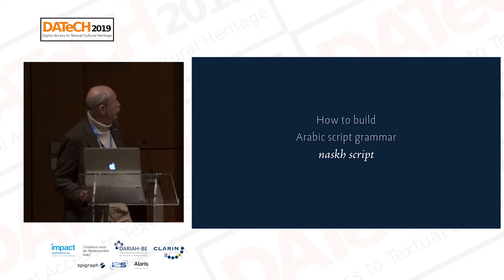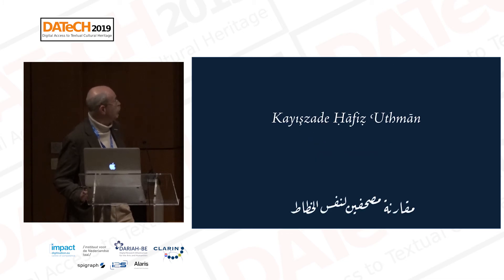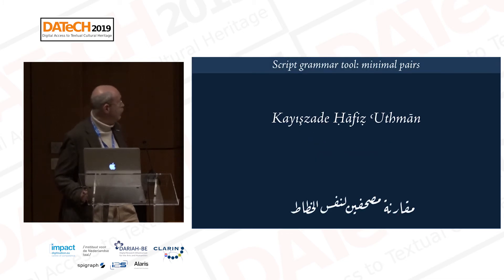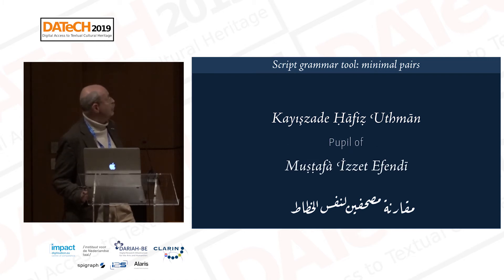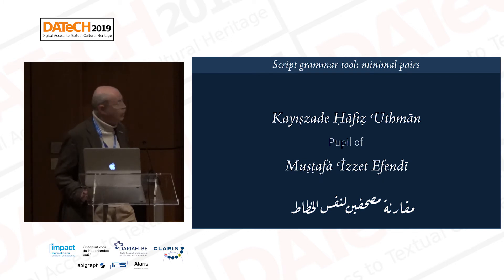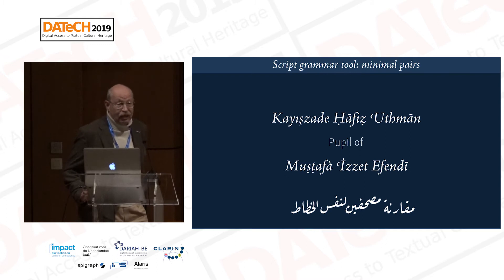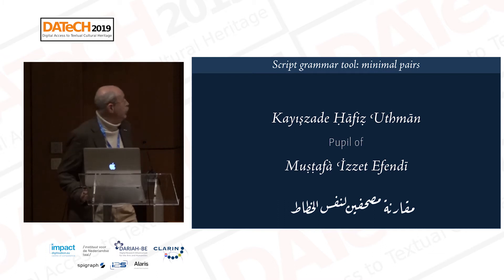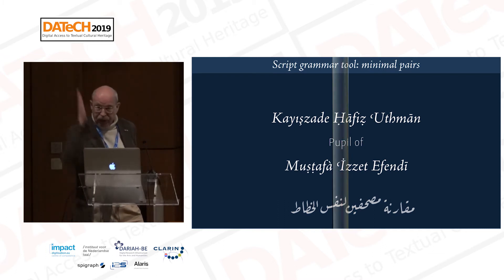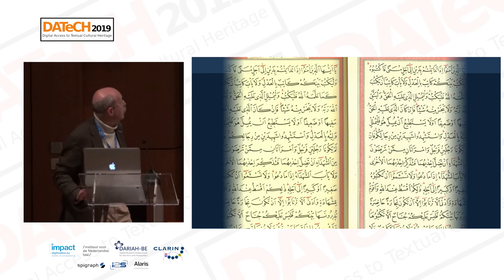How do you build this sort of thing? The ideal evidence is a minimal pair — when you have, from the same calligrapher, in this case Kaizadek Hafez Osman, who happens to be a pupil of Mustafa Ezzet Effendi. The hand of Mustafa Ezzet Effendi was turned into a metal font by an Armenian called Mohendisyan, whose work became the standard for all Nasg typefaces in the industry. So this is very close to the main line of the evolution.